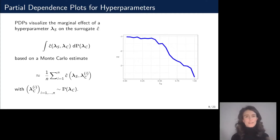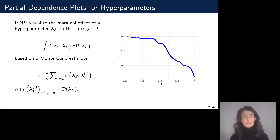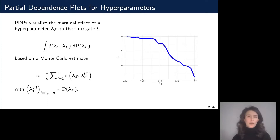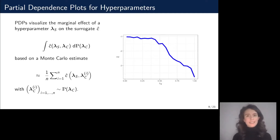Since this integral is usually not straightforward to compute, we approximate it by a Monte Carlo estimate, replacing the integral by a sum where we sample values from the distribution of all other hyperparameters except for the hyperparameter of interest. In the context of hyperparameter optimization, this distribution is usually assumed to be uniform. We can then visualize this for different grid values of the variable lambda S, arriving at a curve representing the marginal effect of a single hyperparameter.